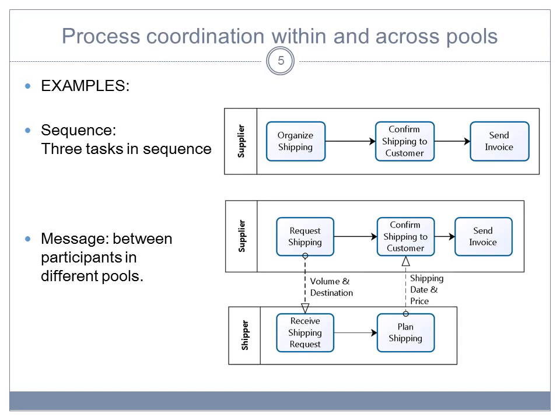And so then the supplier can confirm the shipping to customer and then send the invoice. So you can see how the combinations of sequences and messages result in a global process across the different participants.